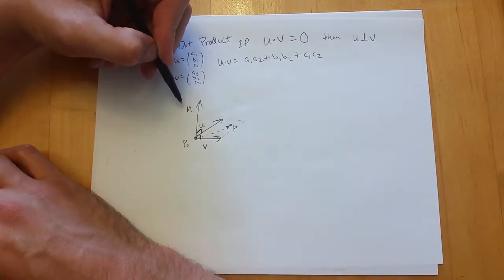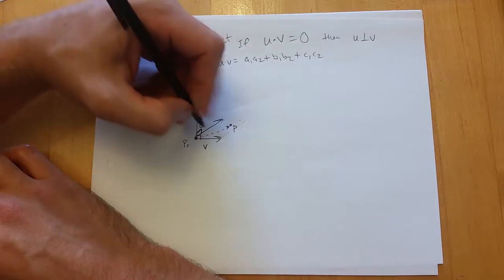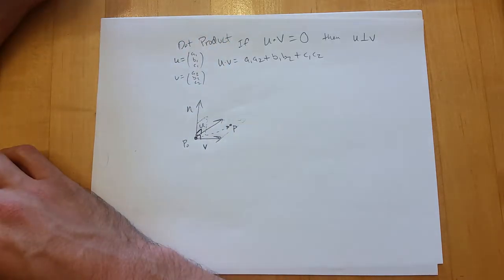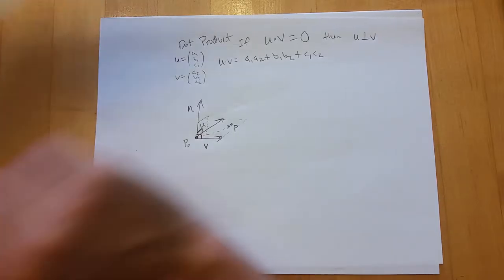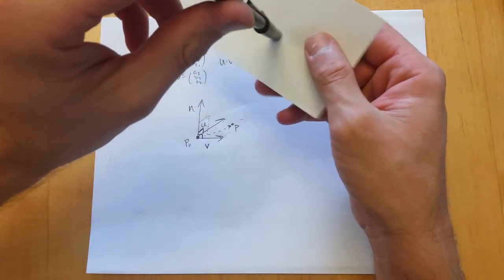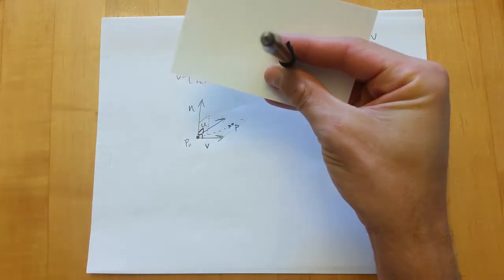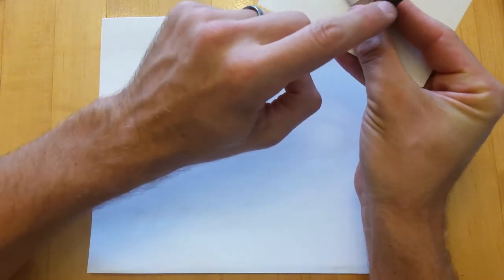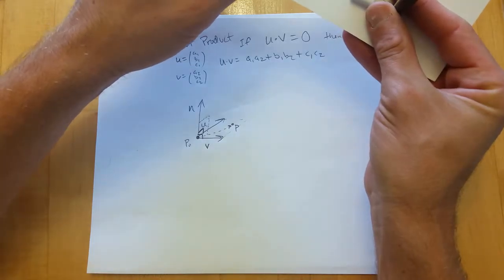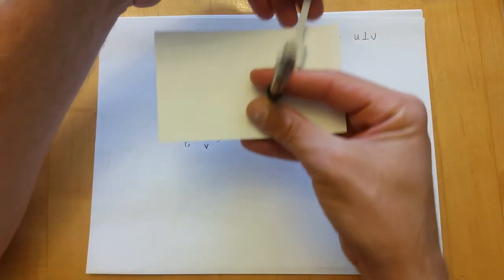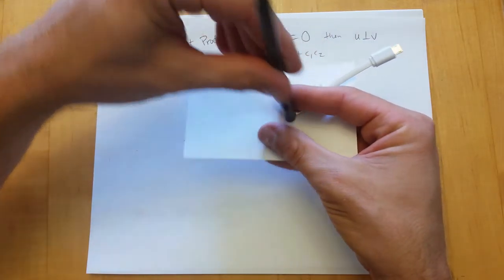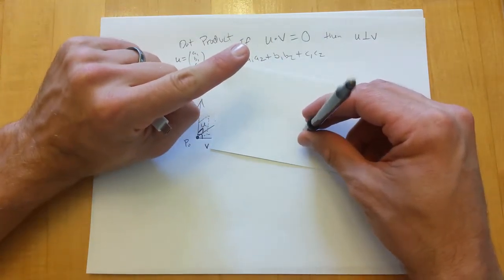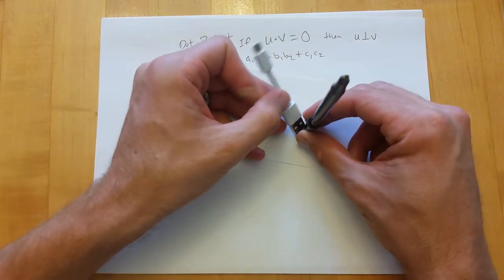A point p will be on the plane exactly when the vector formed from the initial point to p is perpendicular to this normal vector. That angle right there is going to be a right angle. It doesn't matter what direction you go — that's what's nice about this normal pointing straight out — it's always going to be a right angle.